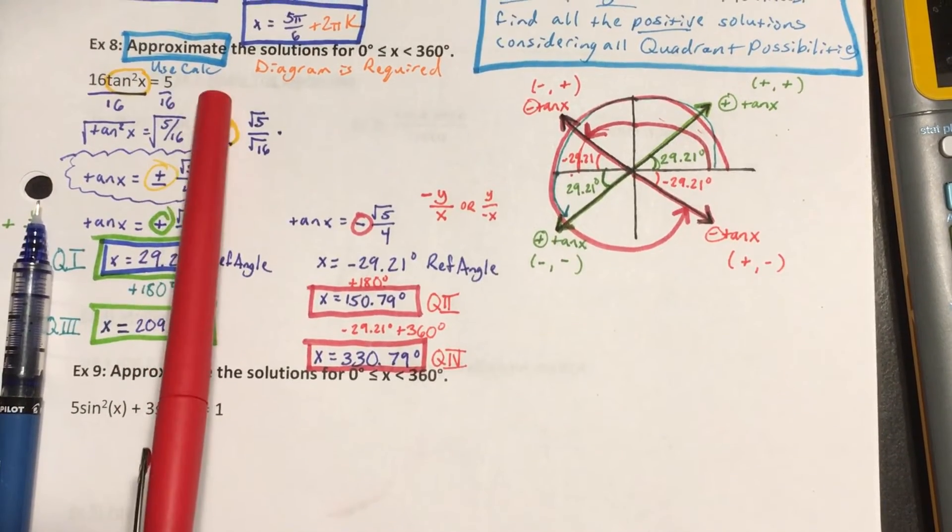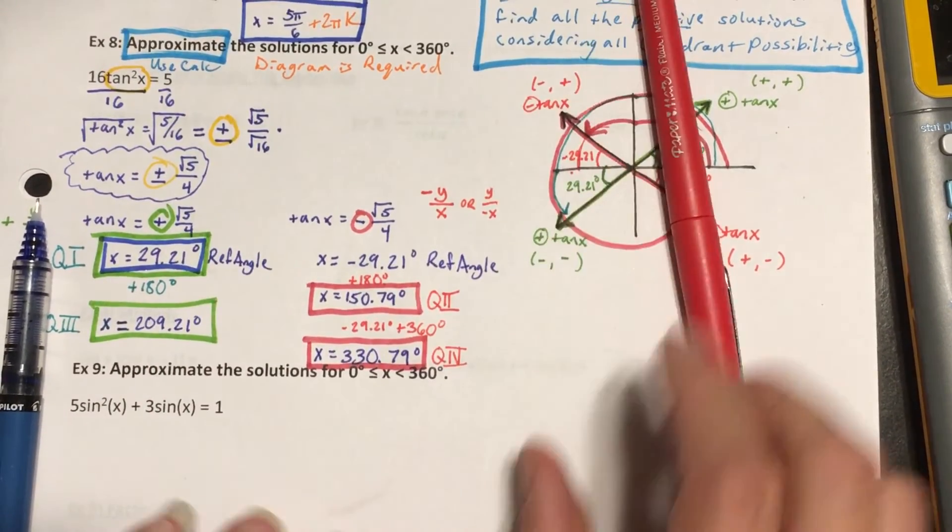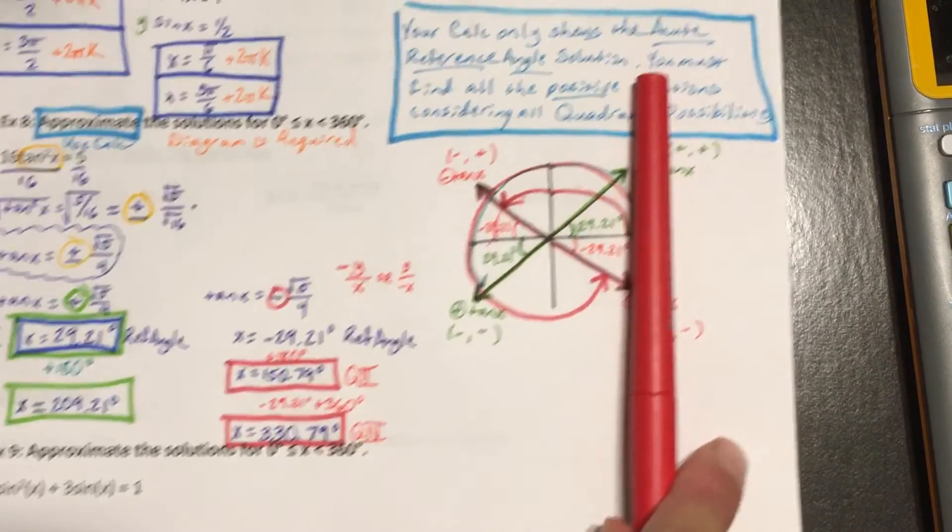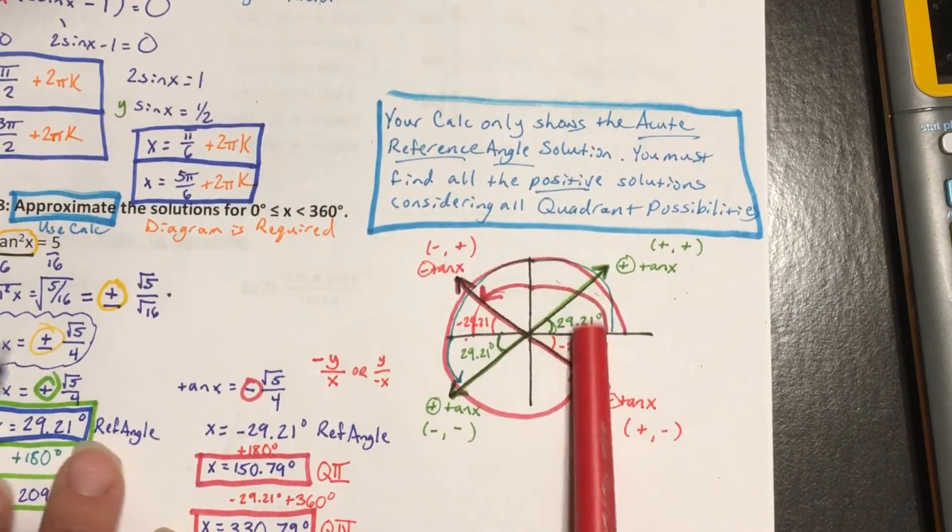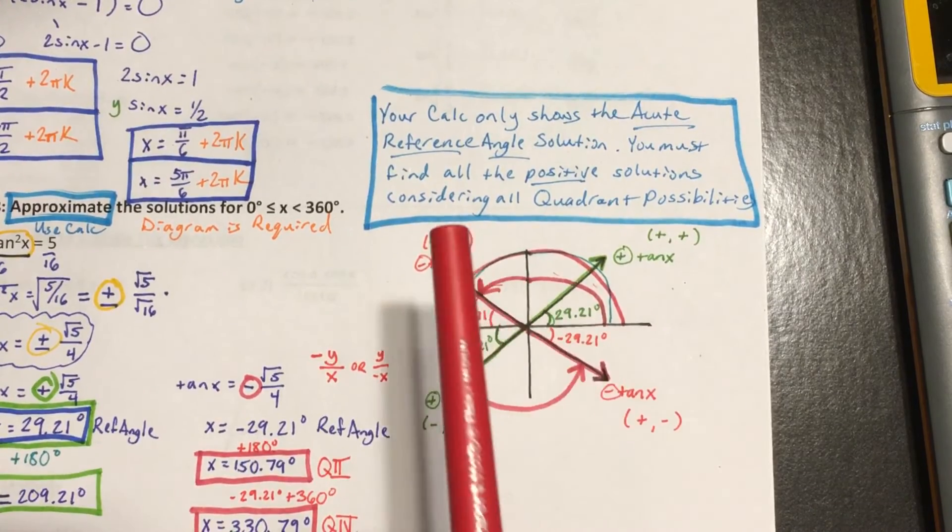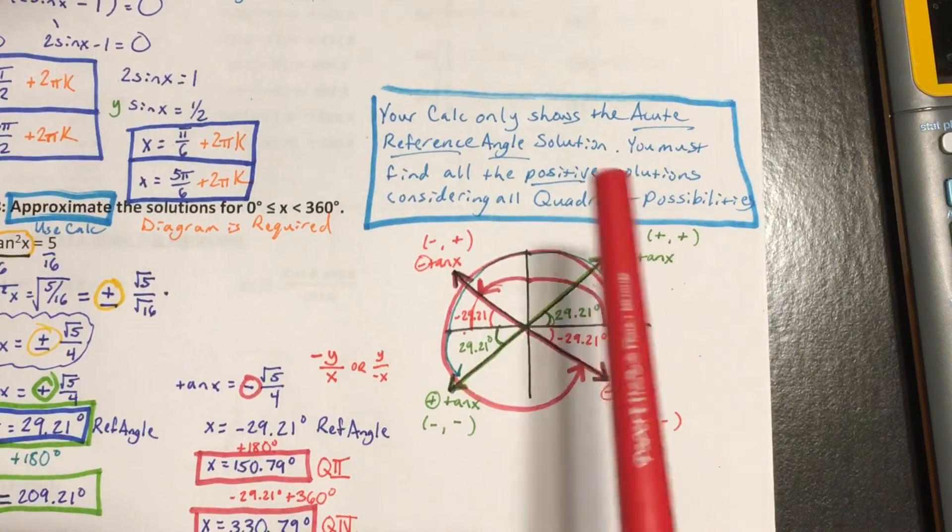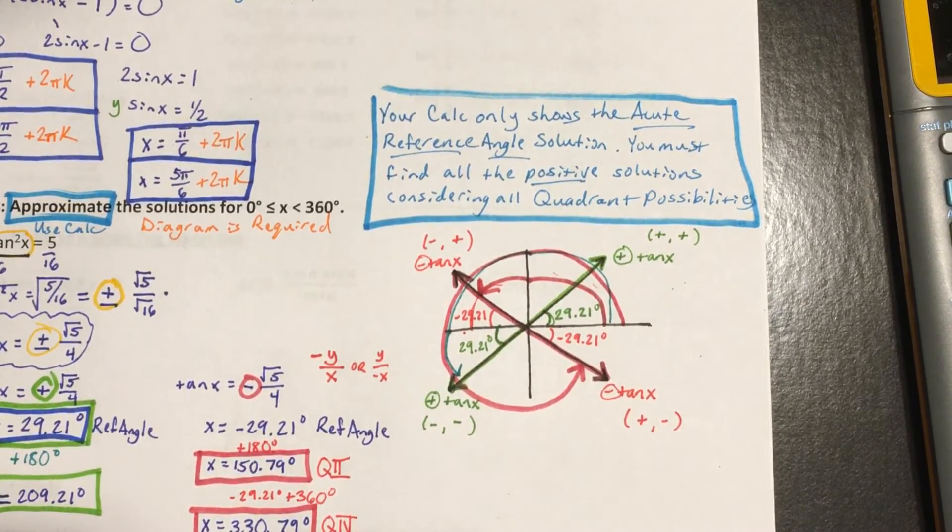So anytime you have to approximate, just remember, your calculator only shows you the acute reference angle. And then you have to draw out your diagram using what you know about the quadrants and their signs to figure out where your other solutions are.